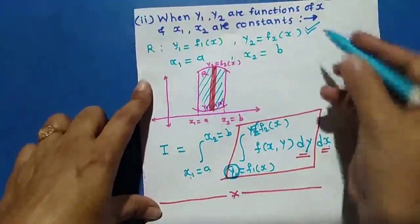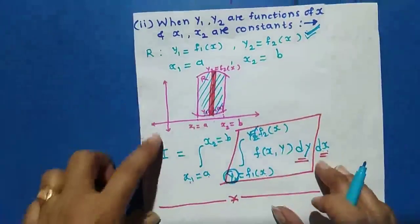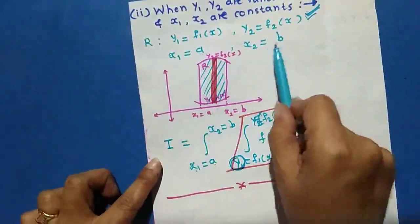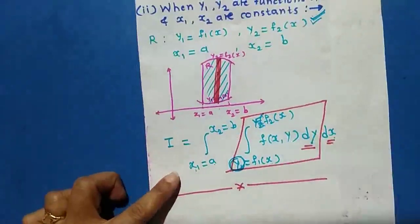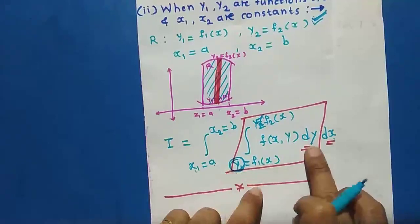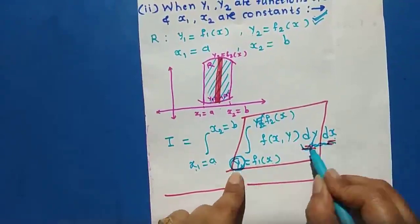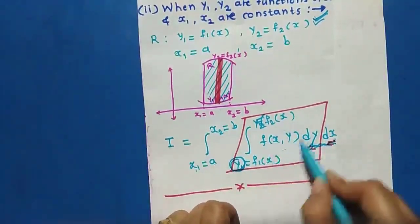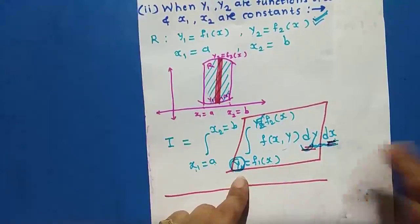Due to the variable limits of y, we take a vertical strip. We always take constant limits outside, so since the limits of x are constant, we take the outer integration with respect to x and the inner integration with respect to y. Since the inner integration is with respect to y, we first write dy, then dx. We evaluate the inner integration of f(x,y) with respect to y, apply the limits of y, and the result is further integrated with respect to x.